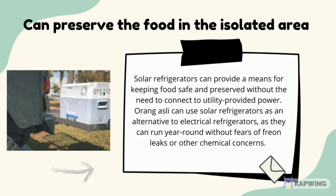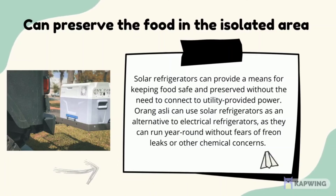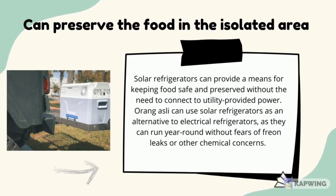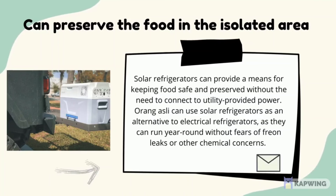Firstly, it can help to preserve food in isolated areas. The solar power refrigerator provides a means for keeping food safe and preserved without needing to connect to utility-provided power. The Orang Asli community can use the solar power refrigerator as an alternative to an electrical refrigerator, as it can run year-round without concerns about power outages or other issues.